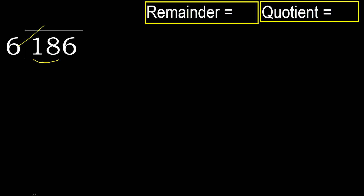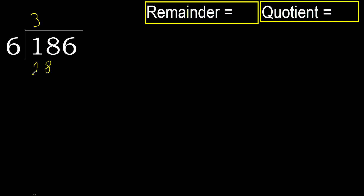6 multiplied by which number is nearest to 18 but not greater? 6 multiplied by 4 is 24 — 24 is greater. 6 multiplied by 3 is 18. 18 is not greater. Subtract: 0. Next.